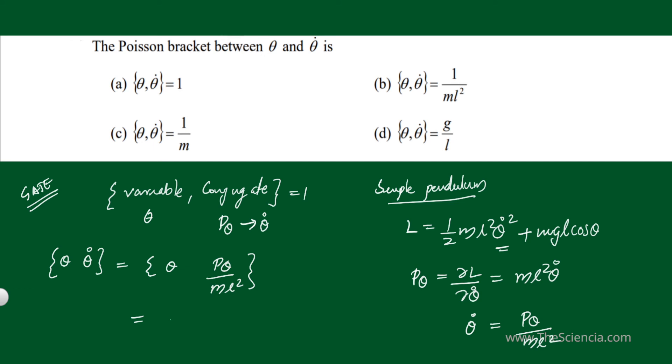Here 1/(M L squared) is a constant, so I can take it outside the Poisson bracket. This gives 1/(M L squared) times {theta, P theta}.